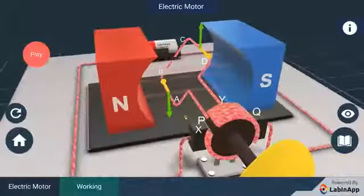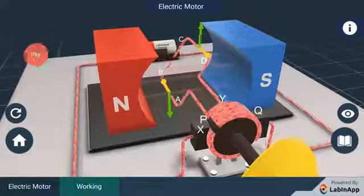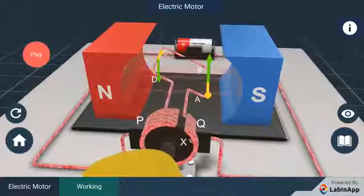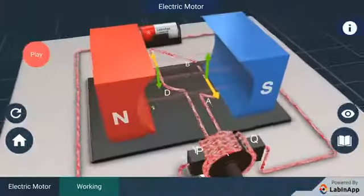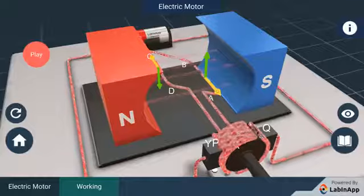At half rotation, Q makes contact with the brush X and P with brush Y. Therefore, the current in the coil gets reversed and flows along the path D-C-B-A.